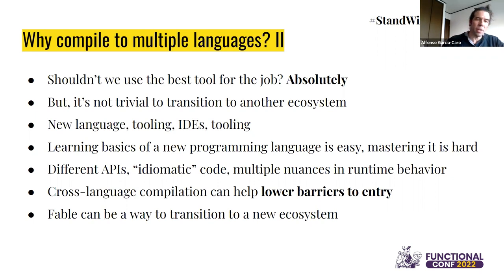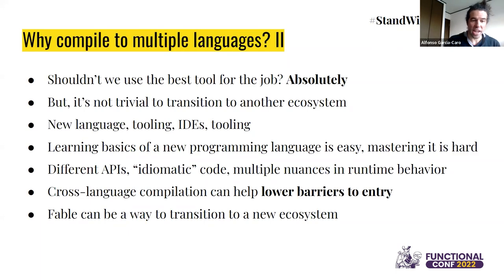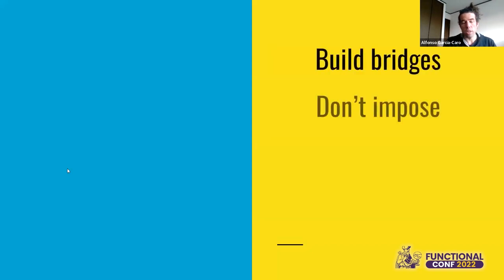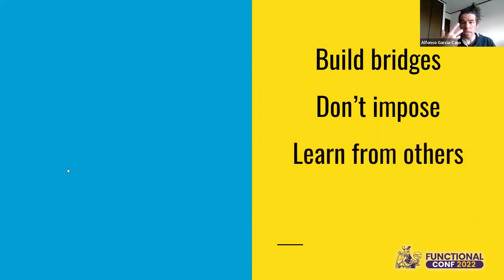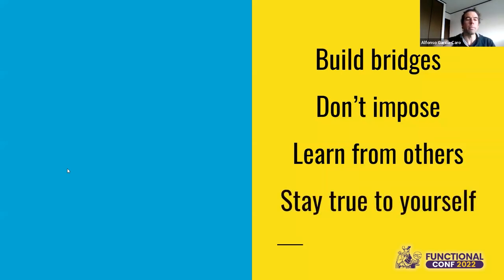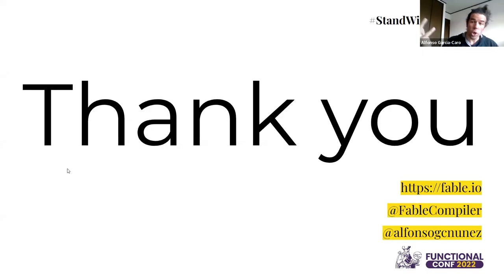Fable doesn't tell you that you need to do everything in F# because F# is the best language in the world. F# has good things and maybe not so good things. But when it becomes your comfort zone, it's good to be able to use that comfort zone to compile to and enter other areas. The Fable philosophy is to try to build bridges, but not impose anything on anybody. If you can't leave your ecosystem you won't learn from anybody else, but if you can — even if it's through a compiler — it's an opportunity to learn, and also an opportunity to stay true to yourself and your preferred way of coding.